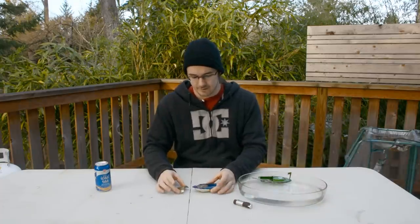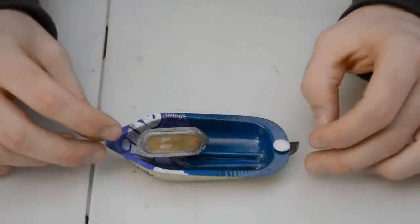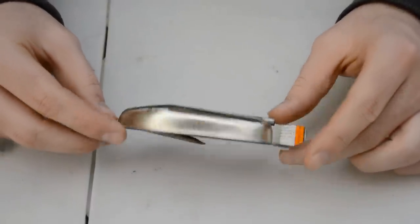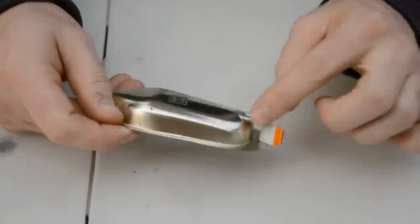But for now I'm just going to give everybody a quick intro to what a pop-pop boat is because I'm sure a lot of you have never heard of these before. What I have here is a little tin boat with a boiler and two tubes that lead from the boiler out to the back of the boat.